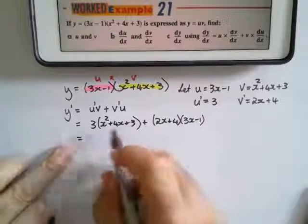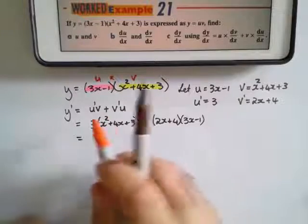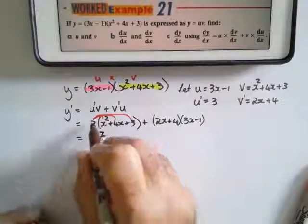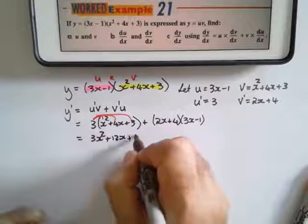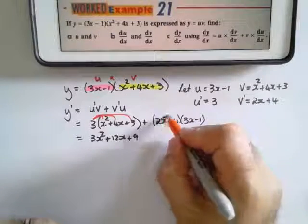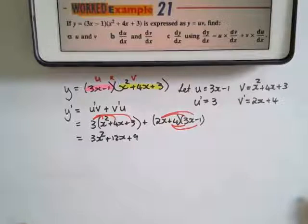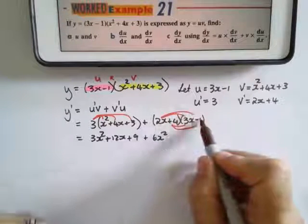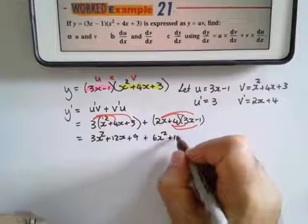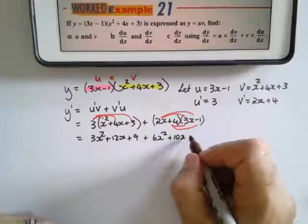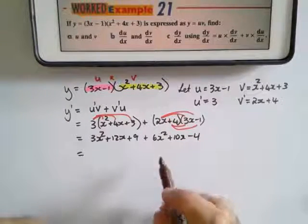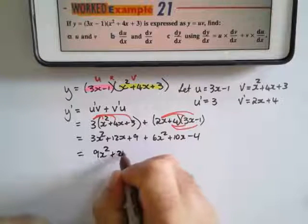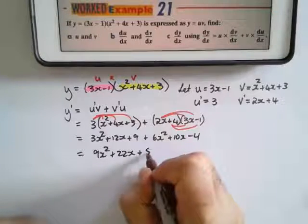I'm going to simplify now. The 3 will be multiplied into all of those terms, giving me 3x squared plus 12x plus 9. In this case I'm going to expand the brackets using the distributive rule: 2x times 3x is positive 6x squared, my two middle terms—minus 2x plus 12x—will give me plus 10x, and 4 times negative 1 is negative 4. Now collecting my like terms: 6x squared plus 3x squared is 9x squared, plus 12x plus 10x is plus 22x, and 9 take away 4 is plus 5.